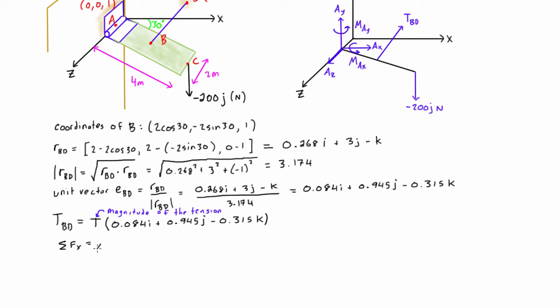For the sum of forces in the x direction, we will have the x component of the reaction force at A, so we have Ax plus the x component of the tension force, plus 0.084 times T. Because this is in static equilibrium, that equals zero. Then for the sum of forces in the y direction...